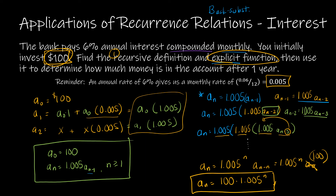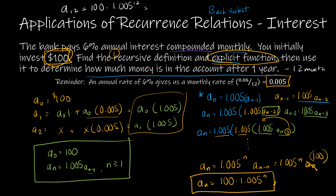The final question asked how much money is in the account after one year. After one year means a_12, because one year is 12 months. So a_12 equals 100 times 1.005-to-the-12th, which using a calculator gives $106.17.